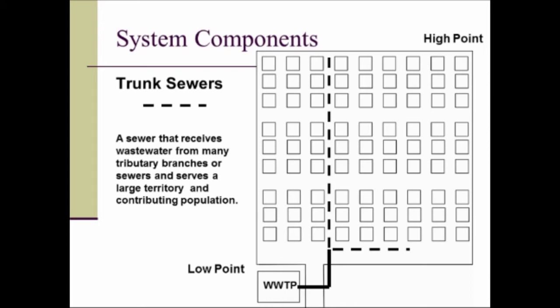Something I want to point out: you can see in the upper right hand corner that's the high point and the lower left hand corner is the low point. This is a gravity system. We've positioned the wastewater treatment plant at the low point of the terrain so that all of the wastewater can gravity flow to the treatment plant, minimizing power.